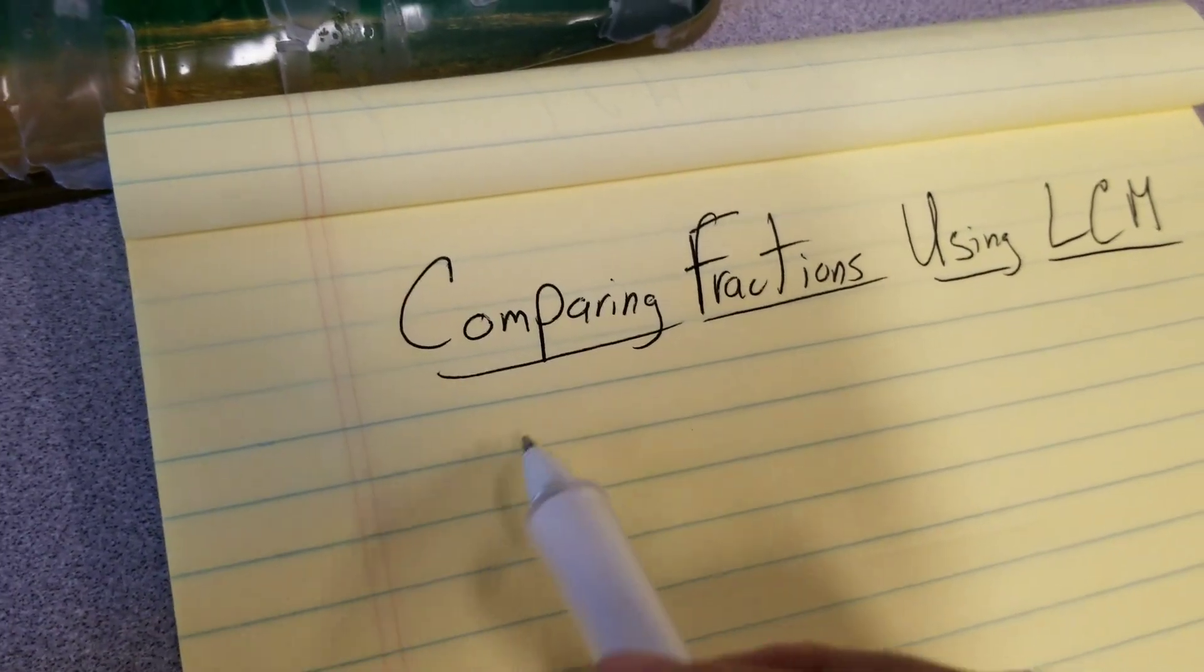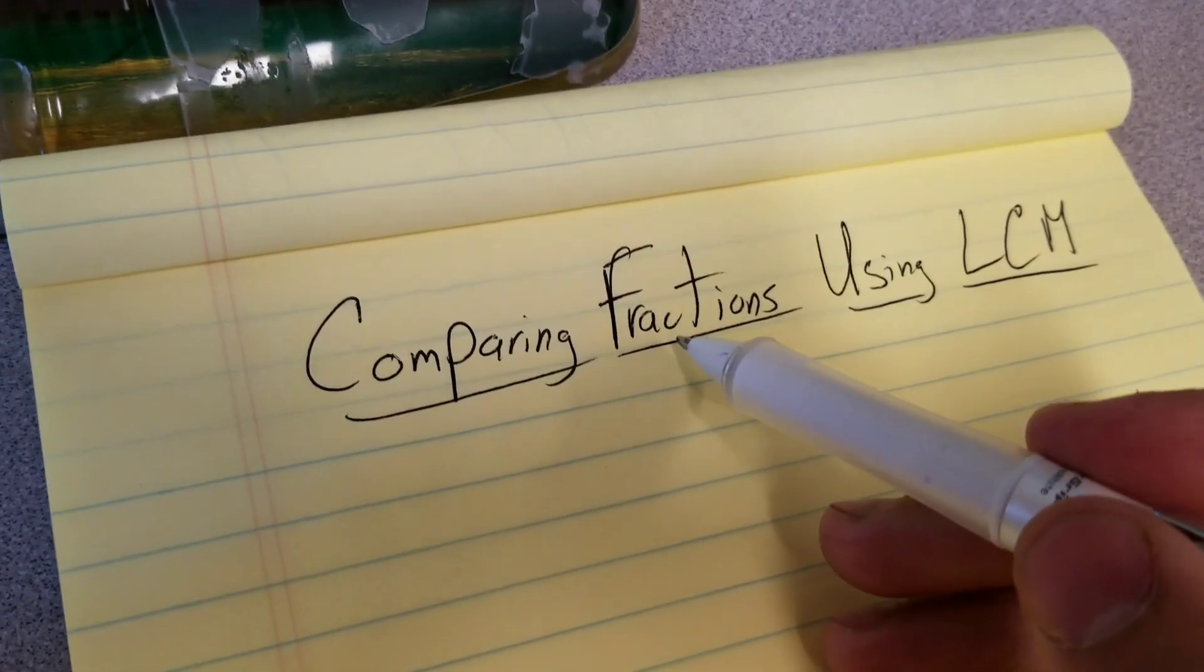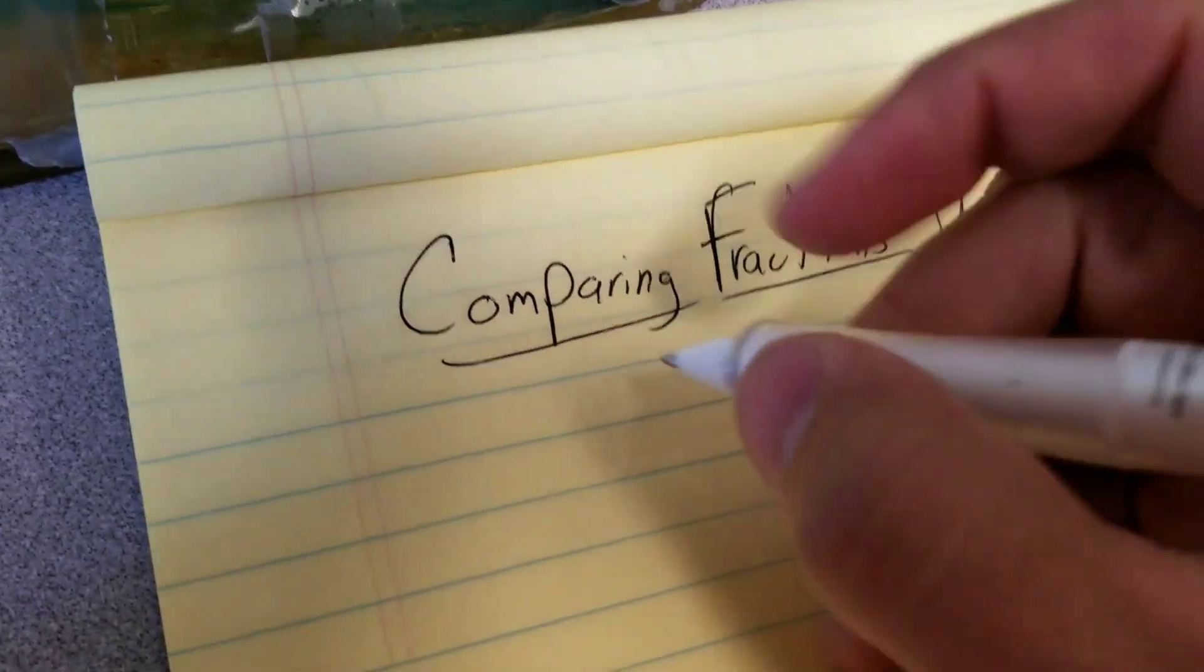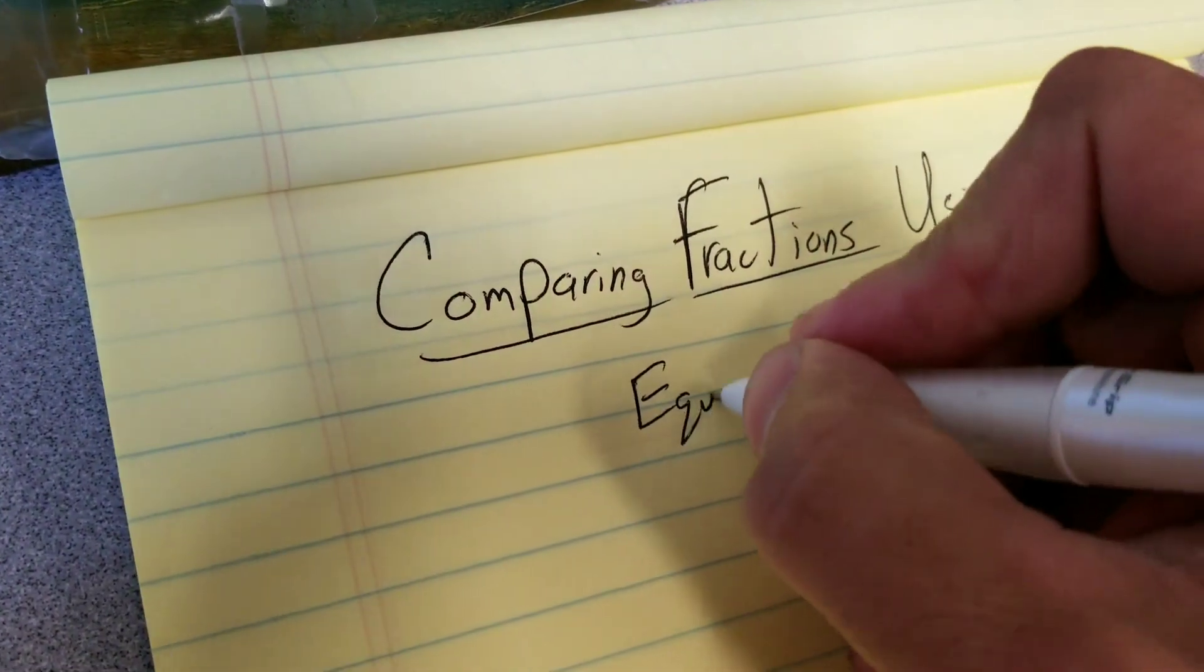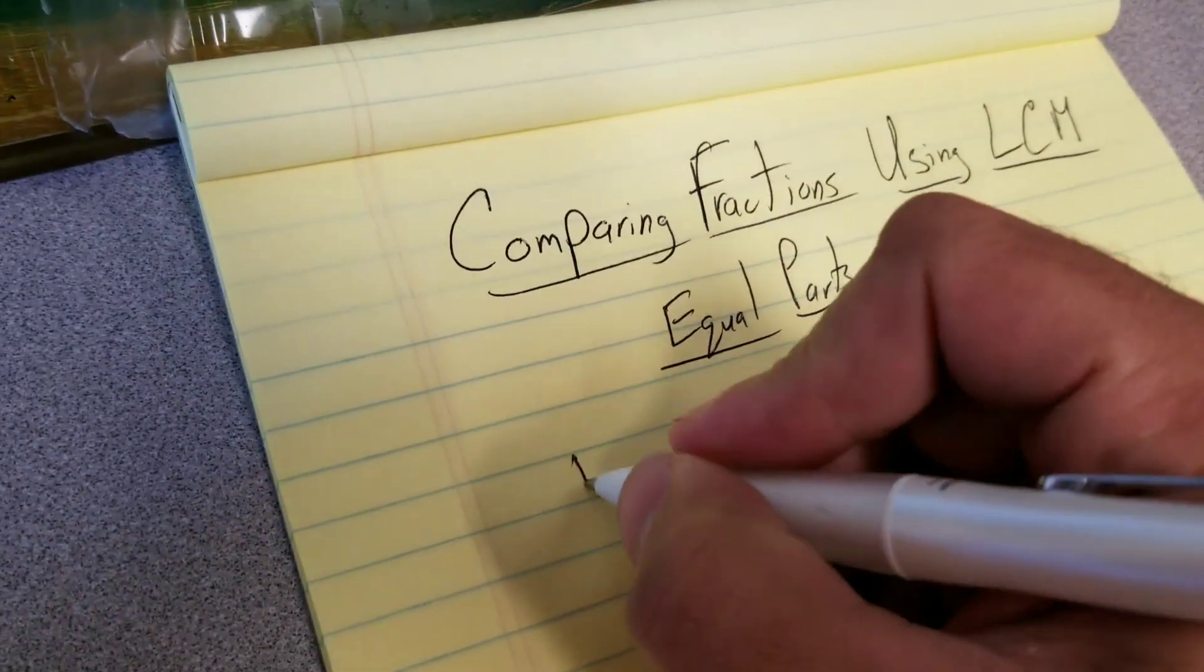Hi guys! Today we're going to talk about comparing fractions using the least common multiple. The biggest thing to know about fractions is that they always have to represent equal parts. So if we have two fractions like 1/2 and 3/5...